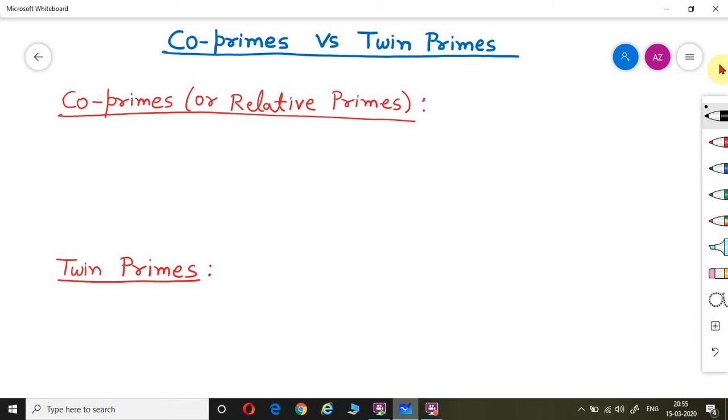So what are co-prime numbers? Co-prime numbers are also known as relative primes. How can we define co-prime numbers? Co-prime numbers are two numbers whose HCF is 1.